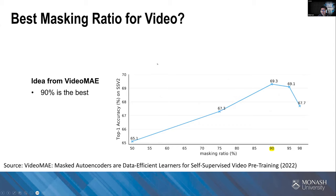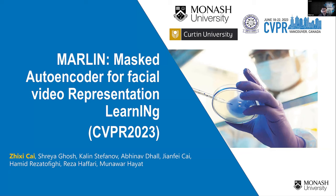The ablation studies found that a 90% masking ratio is best for video — higher than the image-based MAE's 75%. In my understanding, this may be because the input is 16 frames, so even at 90% masking ratio there are still many visible tokens from which the model can learn.